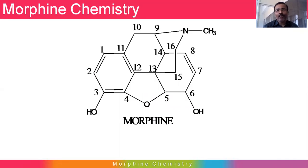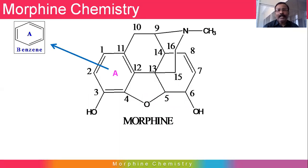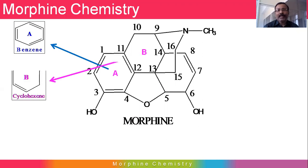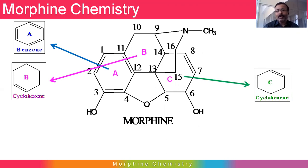This is the general structure of Morphine which contains five rings. Ring A is benzene — it is aromatic in nature. Ring B is cyclohexene, as the double bond in the benzene rotates alternately, so one bond is shared with Ring B. Ring C is also cyclohexene, as there is a double bond between carbon number 7 and 8.